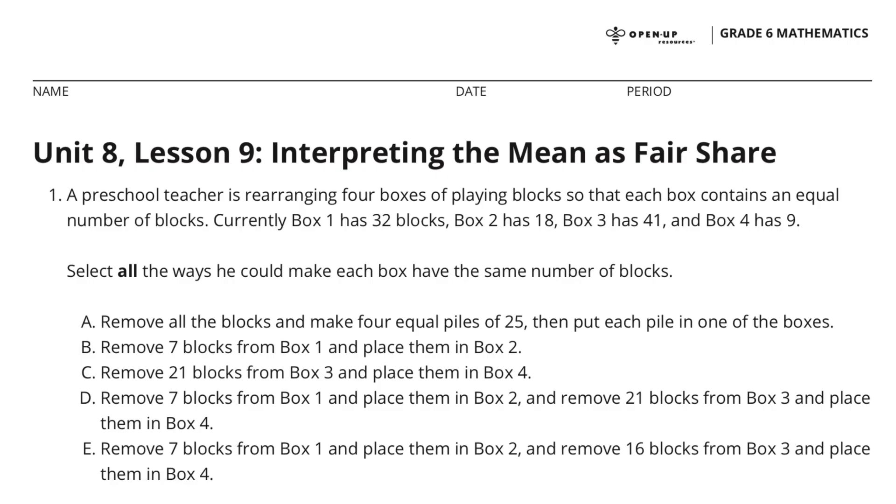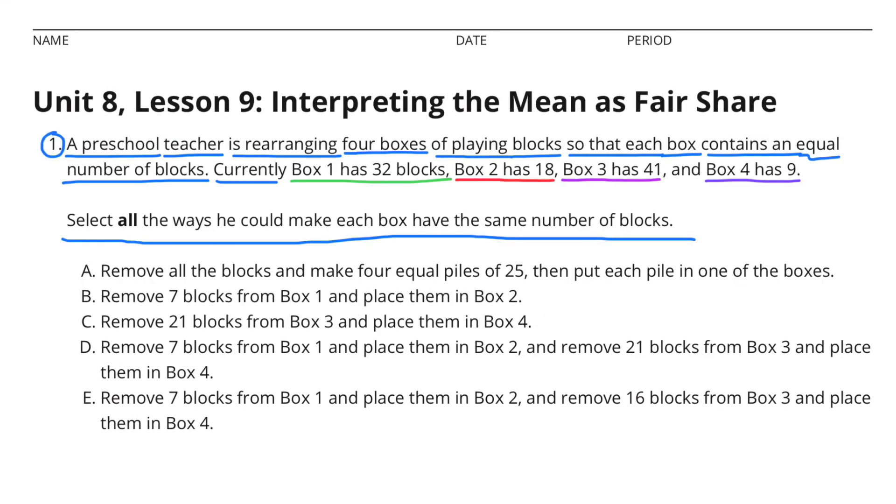Unit 8, Lesson 9, Interpreting the Mean as Fair Share. Number 1. A preschool teacher is rearranging four boxes of playing blocks so that each box contains an equal number of blocks. Currently, Box 1 has 32 blocks, Box 2 has 18 blocks, Box 3 has 41 blocks, and Box 4 has 9 blocks. Select all the ways he could make each box have the same number of blocks.